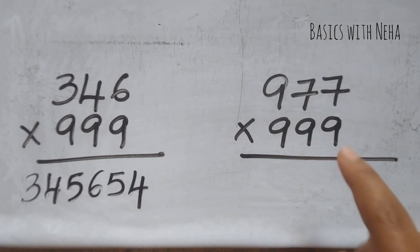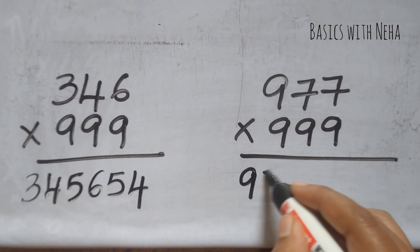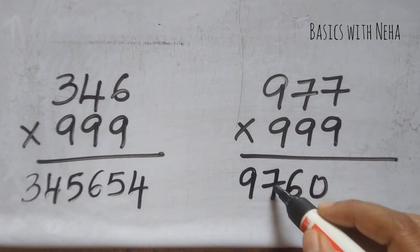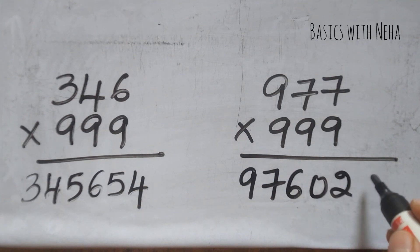977 into 999. It will be 976. 9 minus 9 is 0, 9 minus 7 is 2, 9 minus 6 is 3. And that will be the answer.